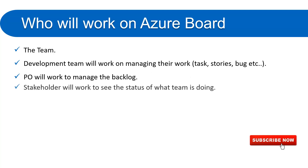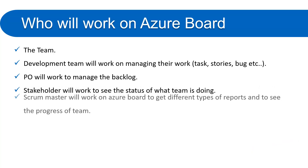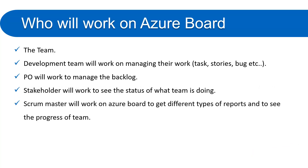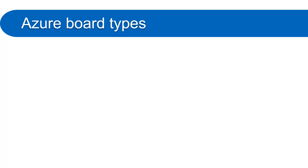The stakeholder will work on Azure Board to see the status and progress of what the team is doing. The Scrum Master will work on Azure Board to get different types of reports and to see the progress of the team. There are multiple types of boards available in Azure DevOps.